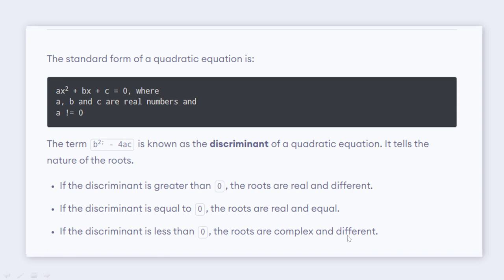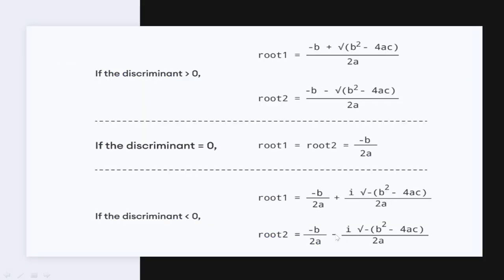If the discriminant is greater than 0, we get real and different roots. The formula for root 1 is minus b plus the square root of b squared minus 4ac, divided by 2a. Root 2 uses the same formula with a minus sign instead.